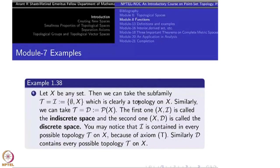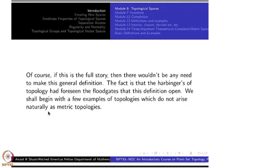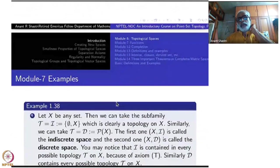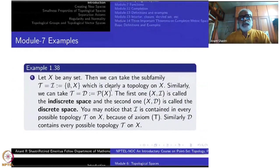Welcome to module 7. As promised last time, let us now take up one by one a few examples of topological spaces directly, which may or may not arise from a metric space. We shall begin with a few examples of topologies which do not arise naturally as metric topologies.